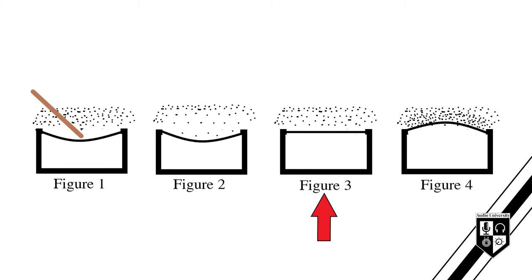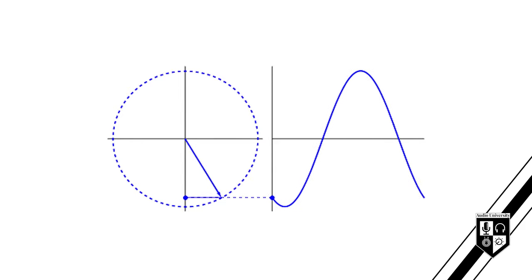Just as in the pond example, the drum membrane's downward movement is followed by an upward recoiling movement, shown in Figure 3. As the membrane moves upward, it forces air molecules around it to bunch together, or compress. Figure 4 shows this compression. Compression occurs when the relative pressure is increased. This cycle of rarefaction and compression — low pressure and high pressure — occurs again and again.